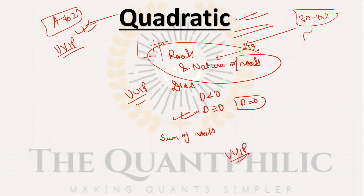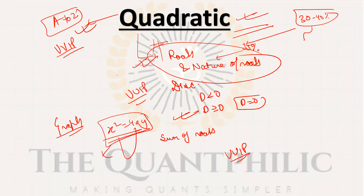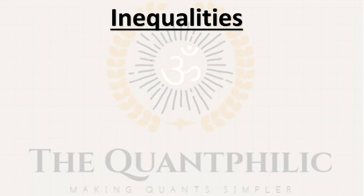Nature of roots, application, usage, and graphs — you should cover all of these. For graphs, quadratic is similar to x²=4ay — a parabola-type graph. One or two questions may ask where the graph is symmetric or what the center point is. For example, if you get (x-2)²=0, then x=2 is the turning point — the graph will turn at x=2.